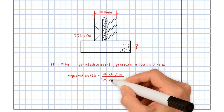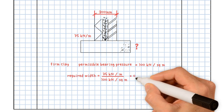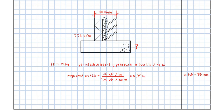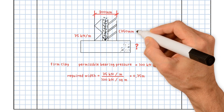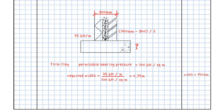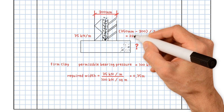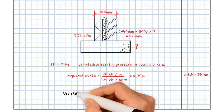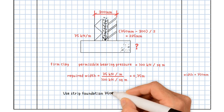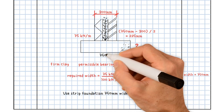The required width of the strip is 75 kN/m divided by the permissible bearing pressure of 100 kN/m², giving 0.75 m. The projection from the wall equals 750 mm minus 300 mm, divided by 2, which equals 225 mm. As a result, we would use a strip foundation 750 mm wide and 225 mm deep.